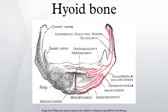Unlike other bones, the hyoid is only distantly articulated to other bones by muscles or ligaments. The hyoid is anchored by muscles from the anterior, posterior and inferior directions, and aids in tongue movement and swallowing. The hyoid bone provides attachment to the muscles of the floor of the mouth and the tongue above, the larynx below, and the epiglottis and pharynx behind.